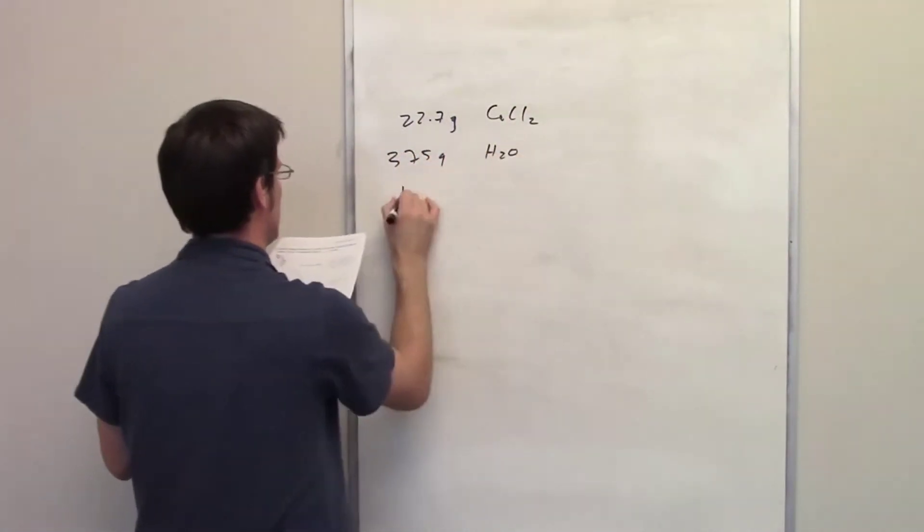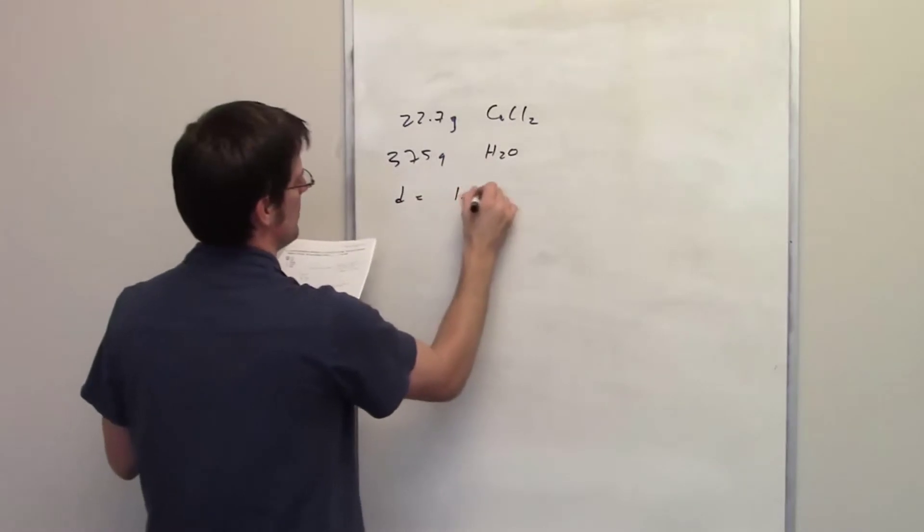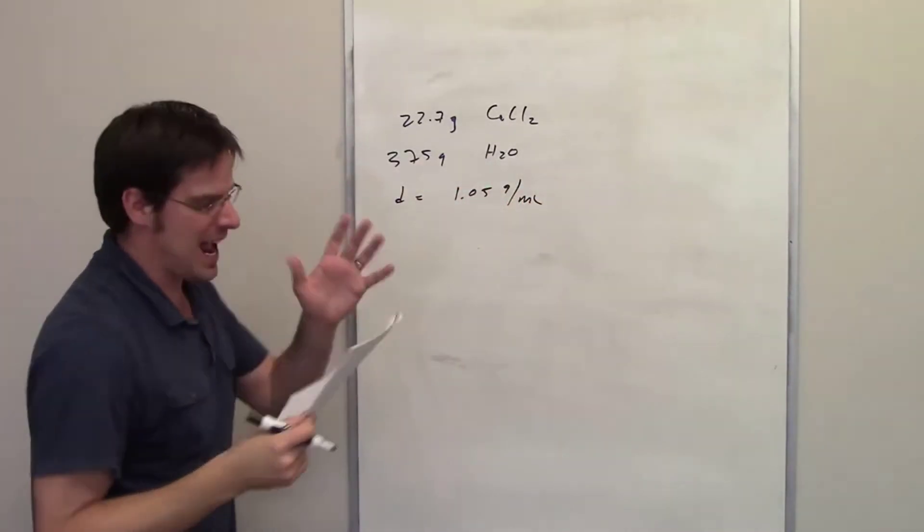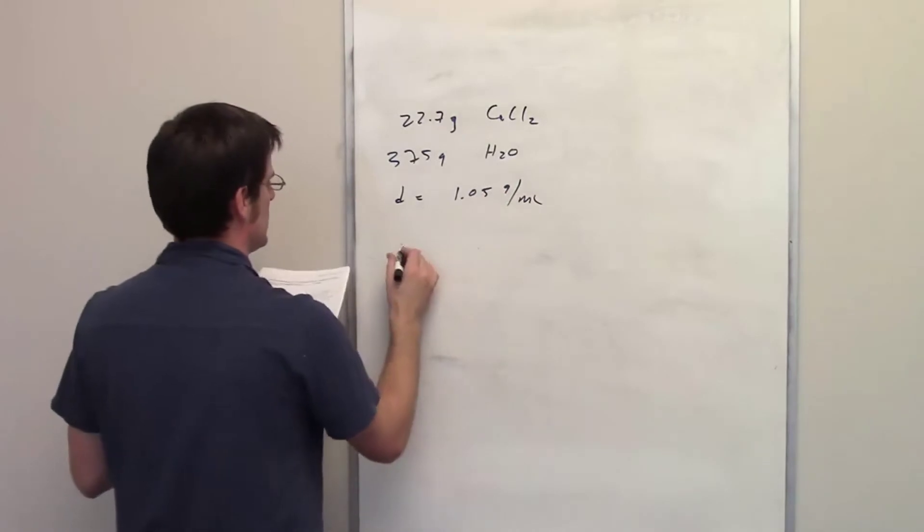This is kind of the funny thing. It tells us the density of the new solution is 1.05 grams per ml, and then it asks us what the concentration is by mass.